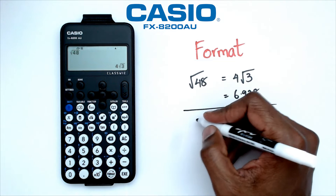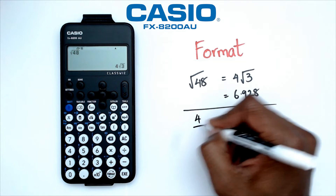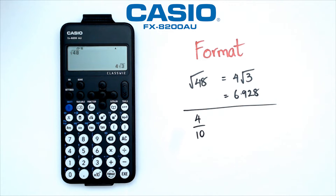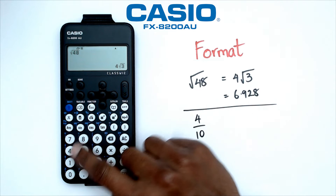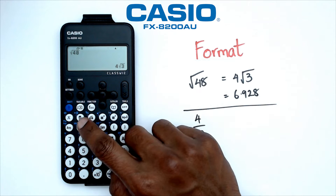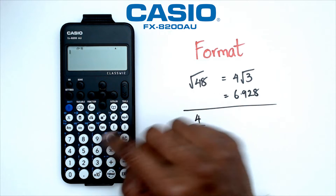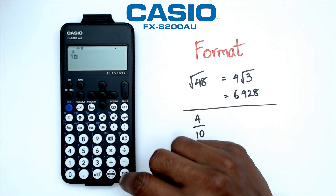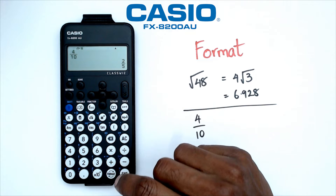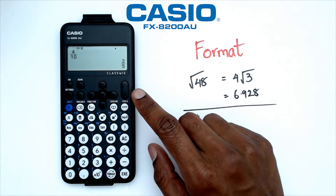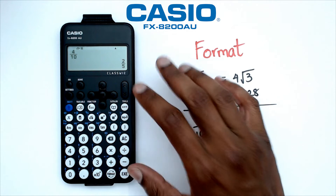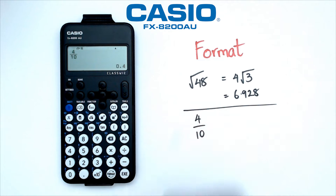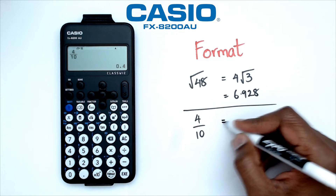What about fractions? Let's take something like four over ten — let's just do four over ten and see what happens. For the fraction button, I've got this little button here. So four over ten — now when I press the Equals button, it is going to give me two over five, which is the simplified version of this fraction. Now if I want this as a decimal, I could go into Shift+Equals and it's going to give me that decimal value.